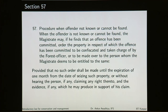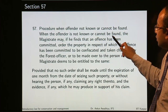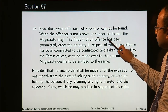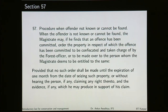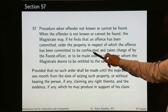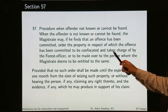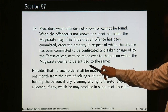Section 57 says procedure when offender not known or cannot be found. When the offender is not known or cannot be found, the magistrate may, if he finds that an offense has been committed, order the property in respect of which the offense has been committed to be confiscated and taken charge of by the forest officer, or to be made over to the person whom the magistrate deems to be entitled to the same.